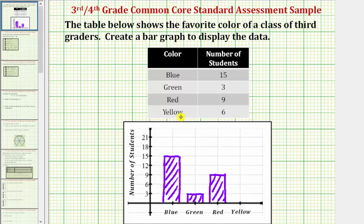And then finally, six students prefer or like yellow. So above yellow along the horizontal axis, we make a bar with a height of six units. This bar graph represents the data displayed in the table.